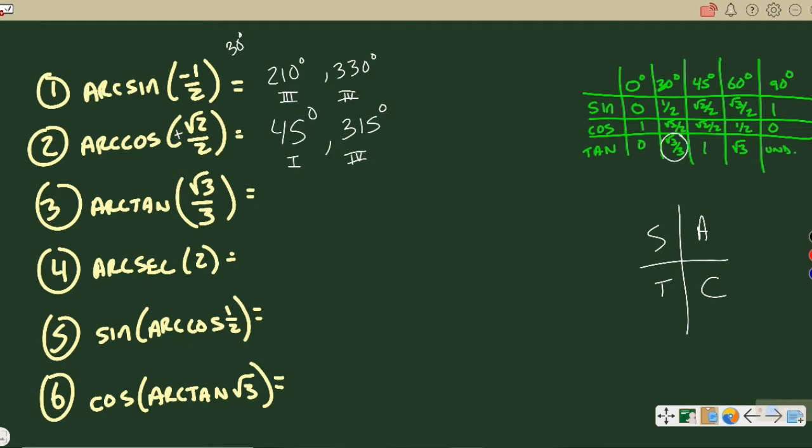Number three, arc tan of root 3 over 3, there it is again, 30 degrees in your chart. So 30 degrees is your answer for quadrant one, tangent also positive in quadrant three, so 210 degrees for your second answer. They'll all have two answers here.